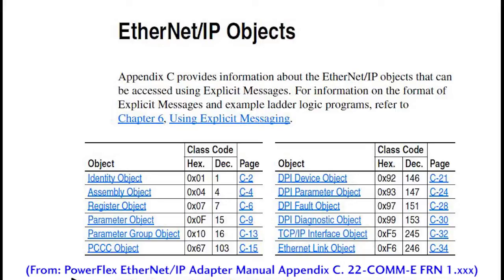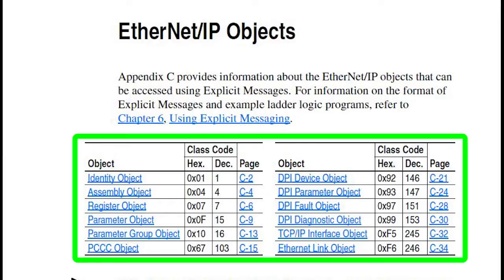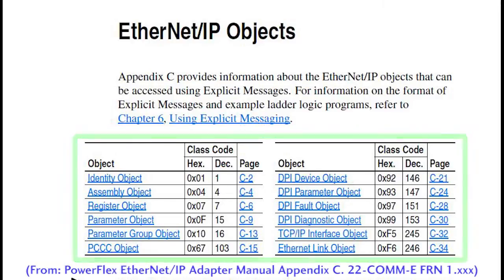The first table in the appendix breaks stuff up into objects. An object is just a generic way to describe things that share common features or attributes. We'll look at the details of these specific objects in the next video where we do a live example with the PowerFlex 40 drive.